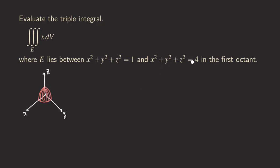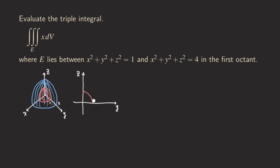There is also the outer sphere with radius 2, which is larger. We are talking about the portion between them. It's actually easier to see this with a side diagram — looking at the YZ plane we can see the sphere of radius 1 and the sphere of radius 2, and the region we want is the portion in between.